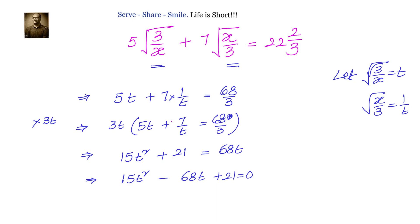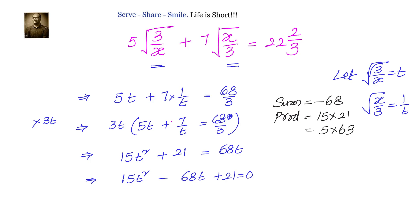Now we can find the value of t either by the quadratic formula or by splitting the middle term. We will use splitting the middle term and write: sum equals to minus 68, product equals to 15 into 21, which can be written as 5 into 63. So we have 15t squared minus 5t minus 63t plus 21 equals to 0.